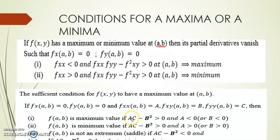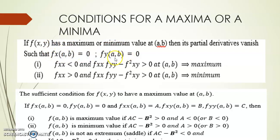Now let's discuss the conditions for maxima and minima. If f(x,y) has a maximum or minimum value at (a,b), then its partial derivatives vanish. fx means dou f upon dou x, the partial derivative of f(x,y) with respect to x, and next we find dou f upon dou y. We differentiate partially with respect to x and with respect to y, and equate both to 0 to get the critical points.